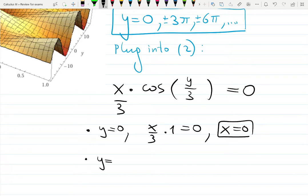When y is ±3π, then I will have x/3 times cosine of π. Cosine of π is -1. Actually, it's also -1 because it's an even function, so it gives zero and x is again zero. And so on. 6π will give you cosine of 2π, which gives you 1. So this is a special case.